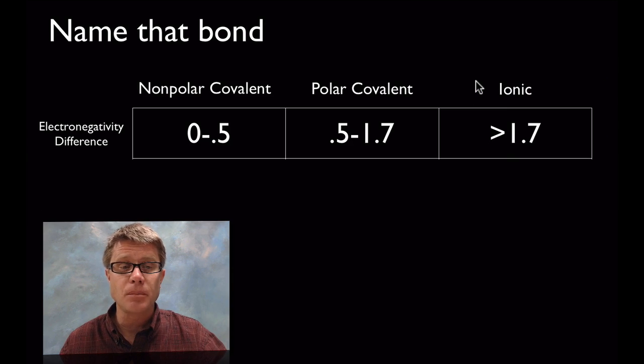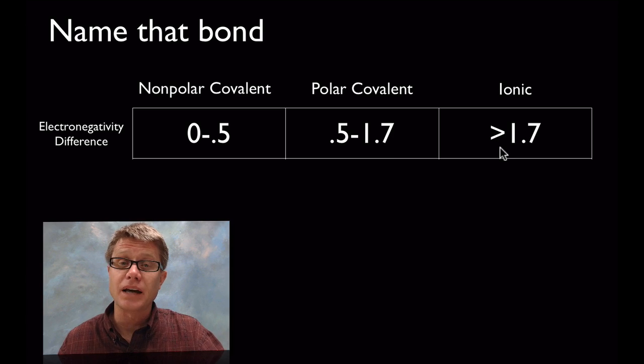So how do you figure out what type of bond it is? Well there's one quick way to do it. You could just look at their electronegativity differences on that chart. If it's less than 0.5 it's generally going to be nonpolar. If it's between 0.5 and 1.7 it's going to be polar covalent. If it's greater than that generally it's going to be ionic, and we'll talk about that in the next video.